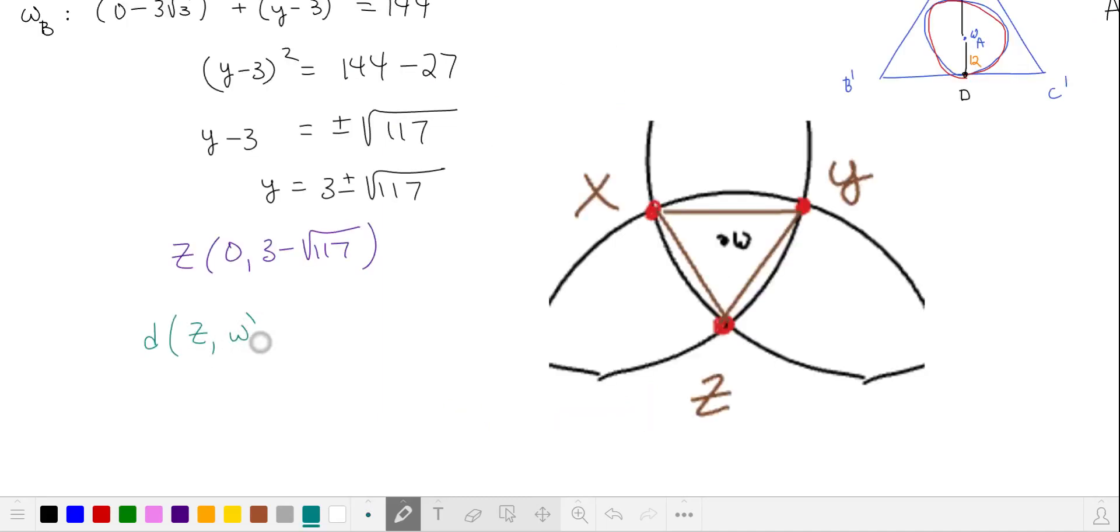The distance between z and omega is just the difference in their y-coordinates. Now we find the side length of this triangle by drawing a perpendicular. So we're going to take this distance that we found, divide by 2, and multiply by the square root of 3. That gives us half of the side length.